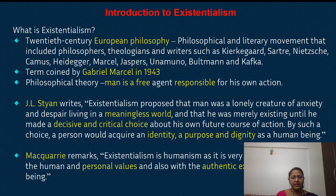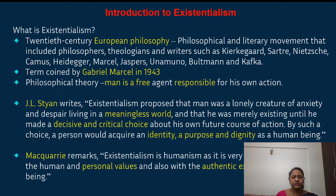J.L. Stein writes that existentialism proposed that man was a lonely creature of anxiety and despair, living in a meaningless world, merely existing until he made a decisive and critical choice about his own future course of action. By such a choice, a person would acquire an identity, a purpose, and dignity as a human being. Unless and until man makes his decisive and critical choice, he is living in a meaningless world — the choices he makes help him create his own identity and purpose of existence on this earth.